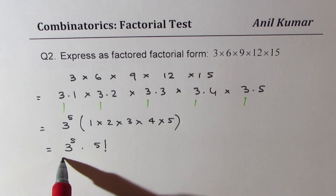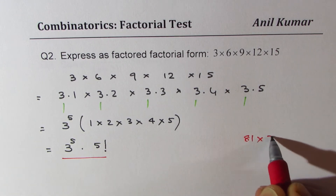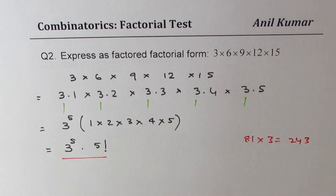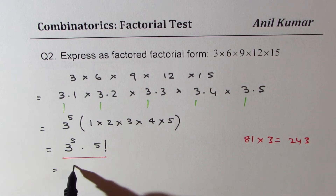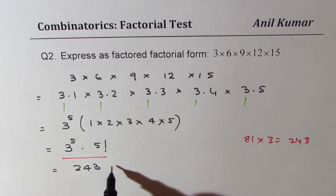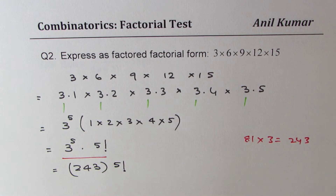At times, we could expand 3 to the power of 5, which is 81 times 3, giving 243. So you could also write this as 243 times 5 factorial. That is how you solve question number two. I hope the steps are absolutely clear.